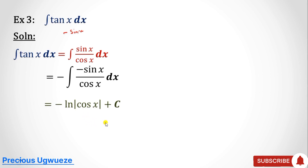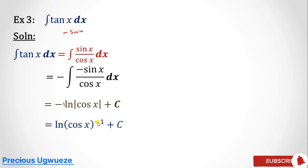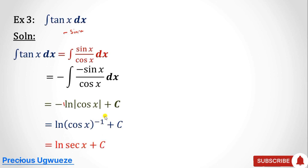We use absolute value because logarithm functions must take positive arguments, so the absolute value ensures positivity. We can bring the negative sign up as a power: cos(x) raised to −1 is sec(x), so the final answer is ln|sec(x)| + C. Some people leave their solution at the −ln|cos(x)| + C form.